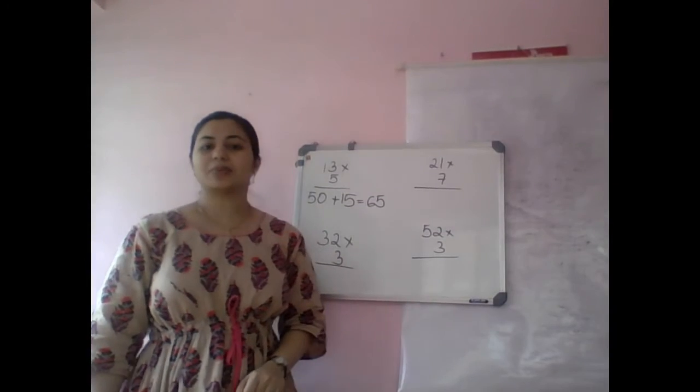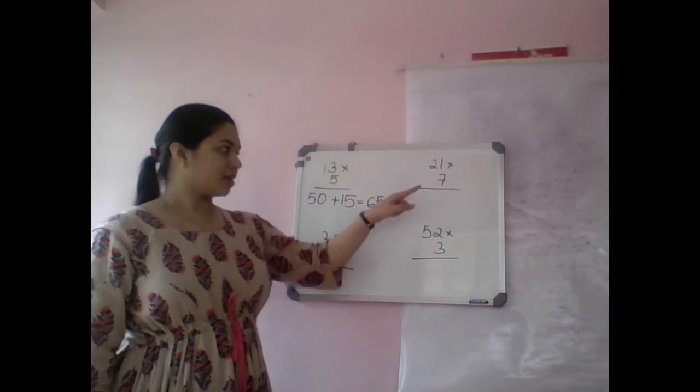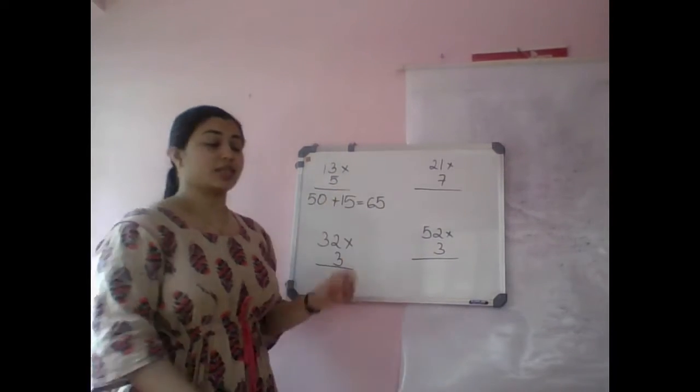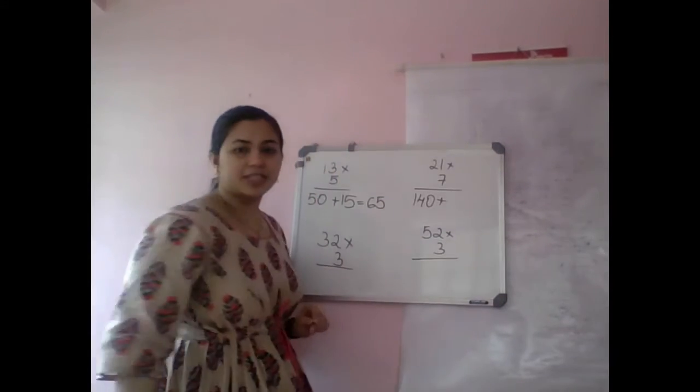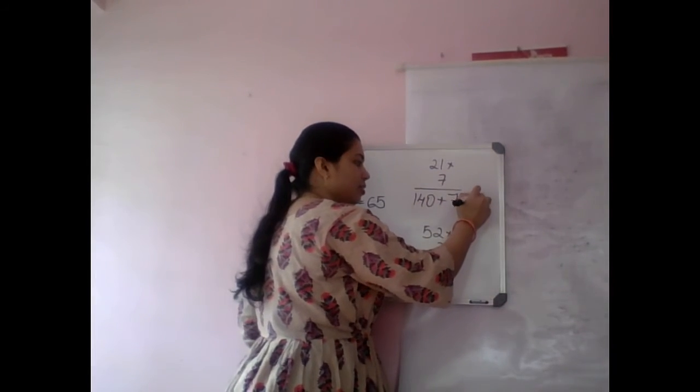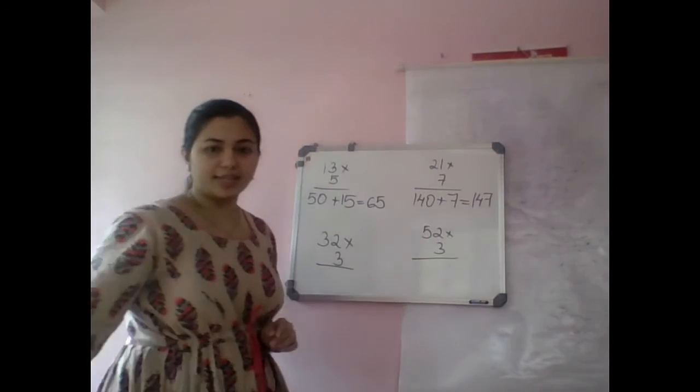Next one: 21 into 7. 7 times 20, 140 plus 7 times 1, 7. So the answer is 147.